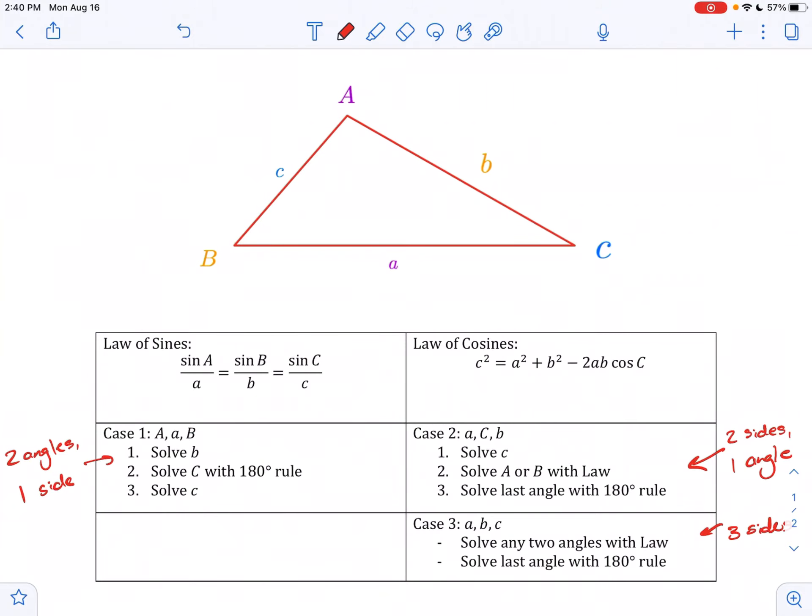Imagine you're given two angles and a side. Immediately what you can do is solve for the third angle using the 180 degree rule. So imagine I give you B and C, you can find angle A by just subtracting B and C from 180.